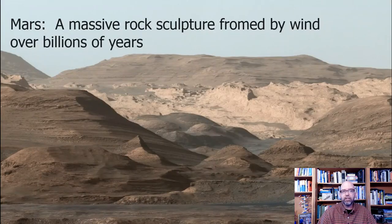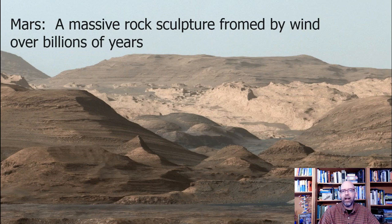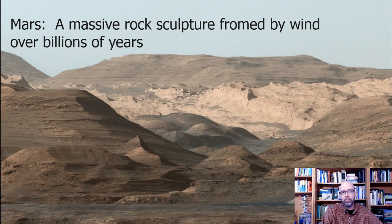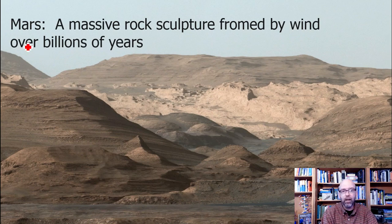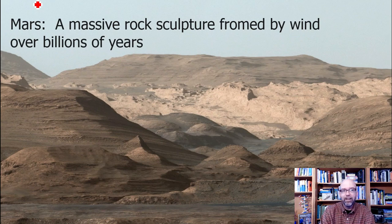So what is the conventional timescale here? It's thought that the crater, the lake, and the deposition of sands inside that lake took place well over 2 billion years ago. And then what you're seeing in front of you in this picture is well over a billion years of wind erosion to create the scene you're seeing now. We could say that Mars is a massive rock sculpture produced from winds over billions of years.